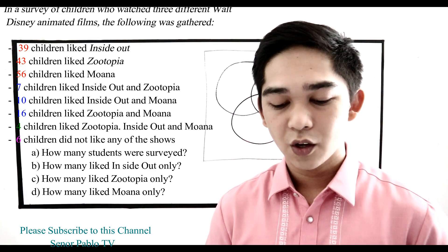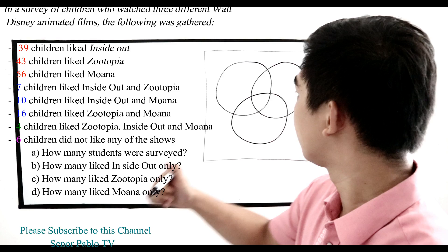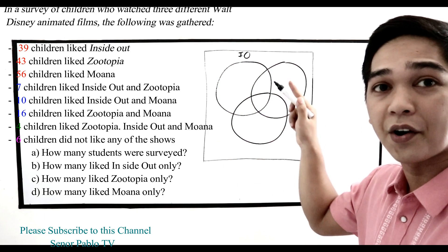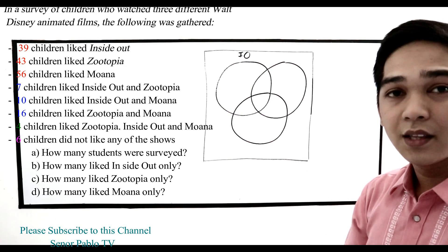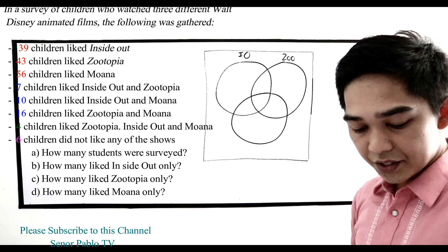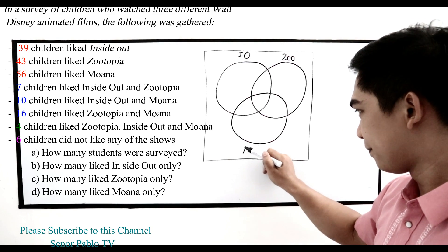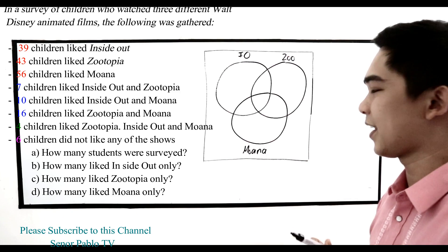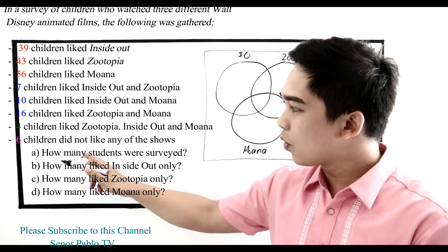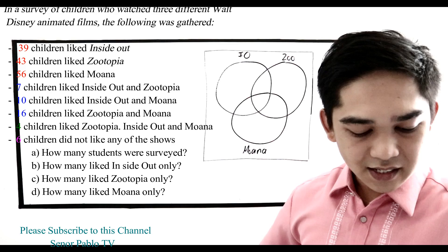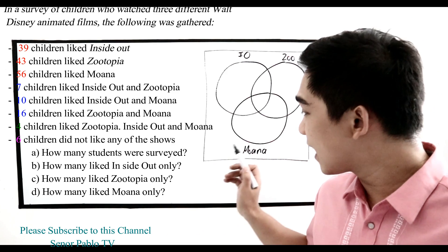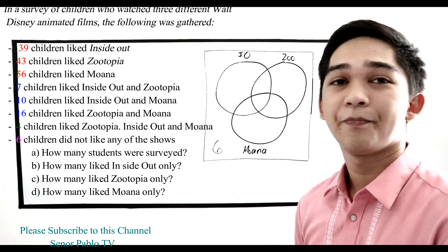We have 3 categories: Inside Out, Zootopia, and Moana. Our Venn Diagram will have three circles — the first circle is Inside Out, the second is Zootopia, and the third is Moana. Working backwards, we start from the last given: 6 children did not like any of the shows, so we place 6 outside all the circles.